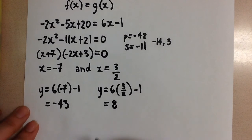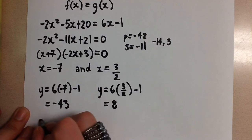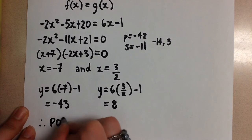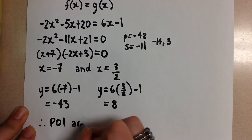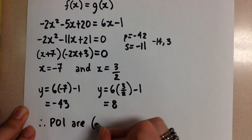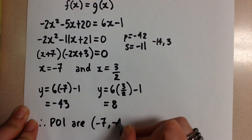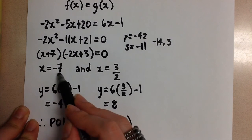And so the line and the parabola cross at two different points. And the first point of intersection will be negative 7, negative 43.